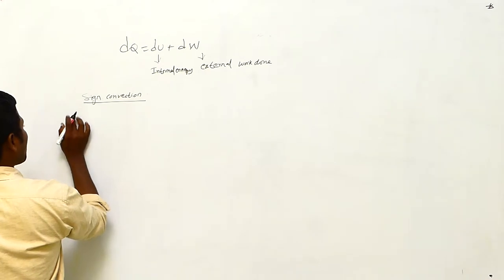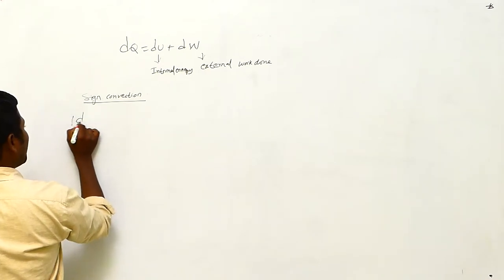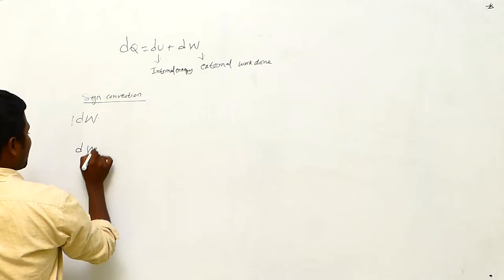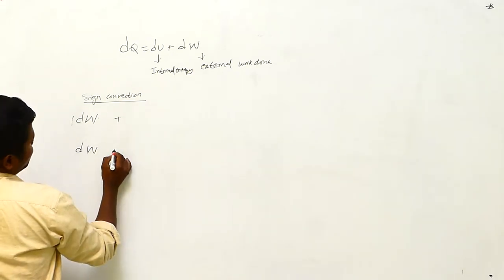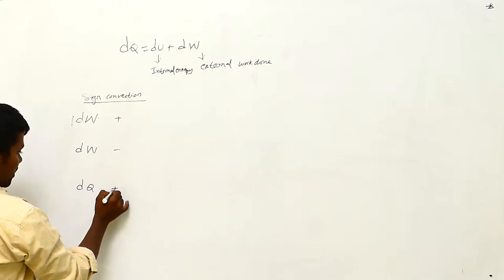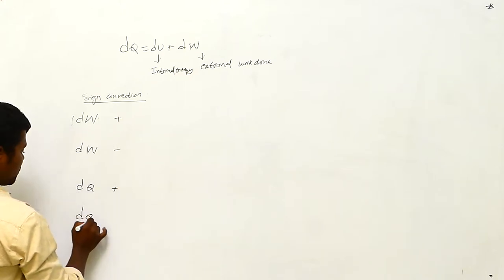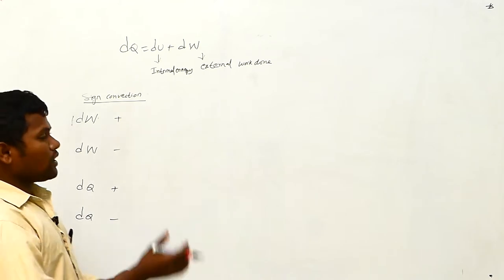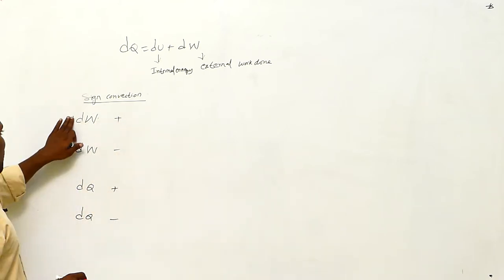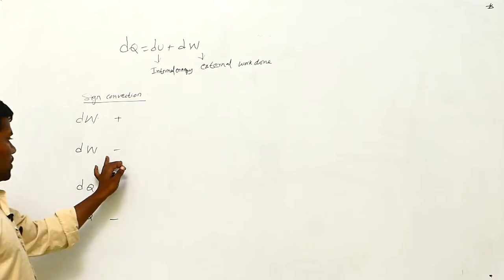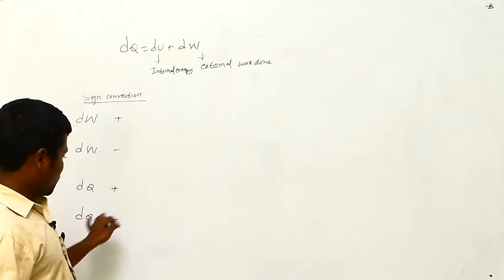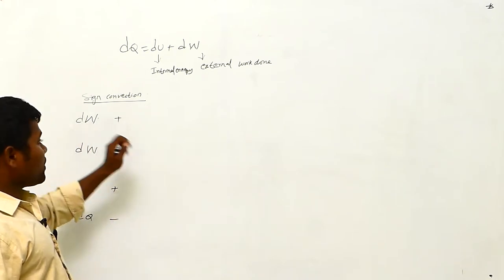Next, sign conventions for the first law of thermodynamics. dW may be positive or dW may be negative. Similarly, dQ may be positive or dQ may be negative. These are the cases we consider when solving problems.